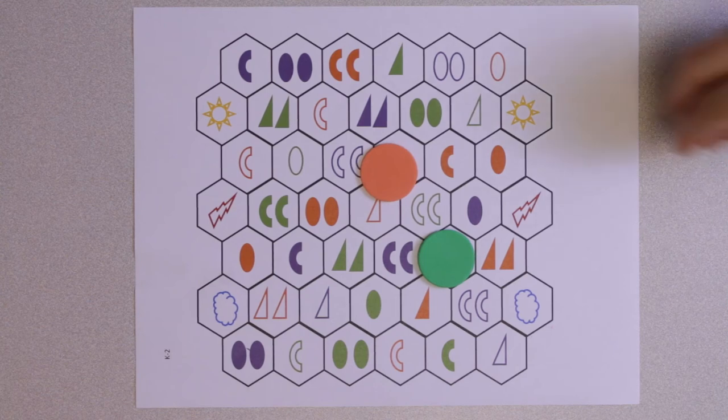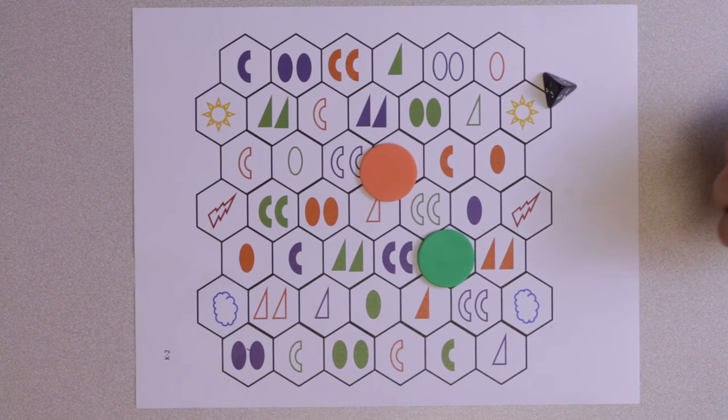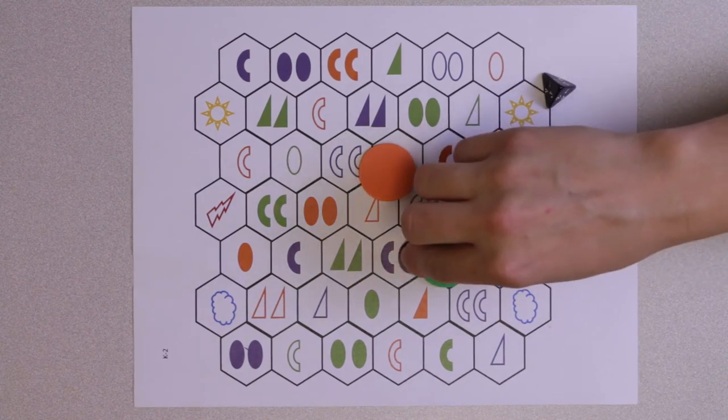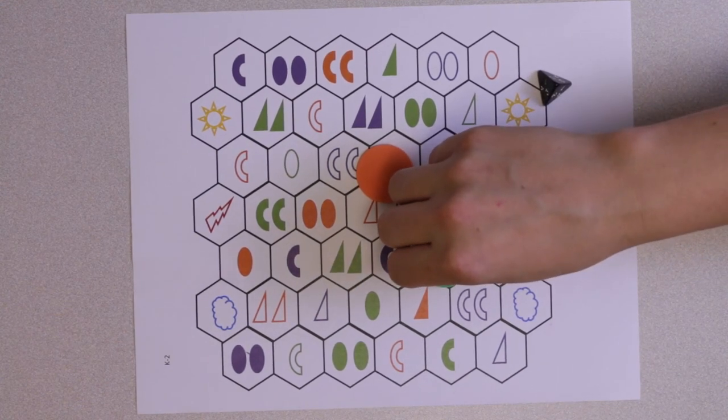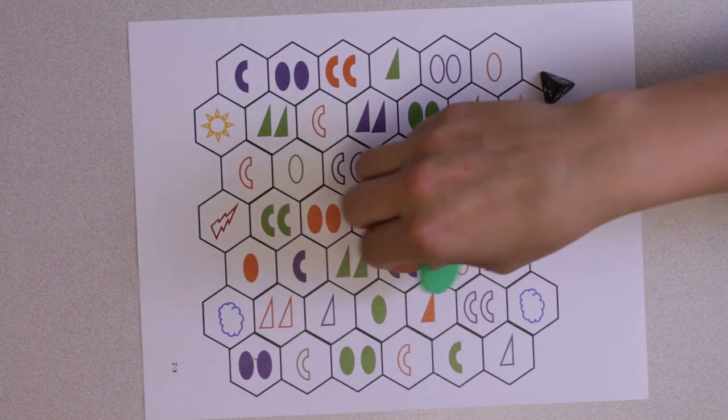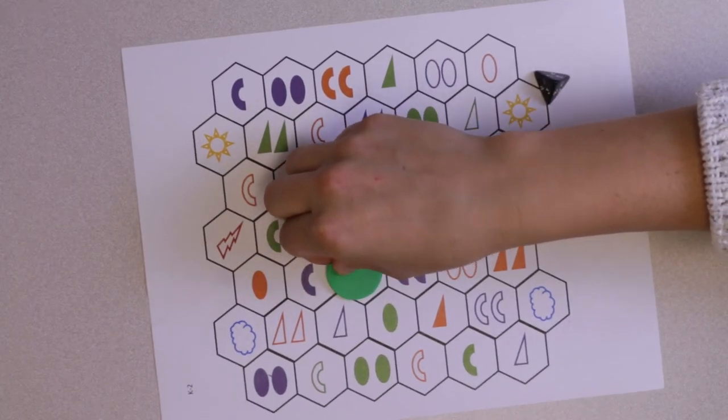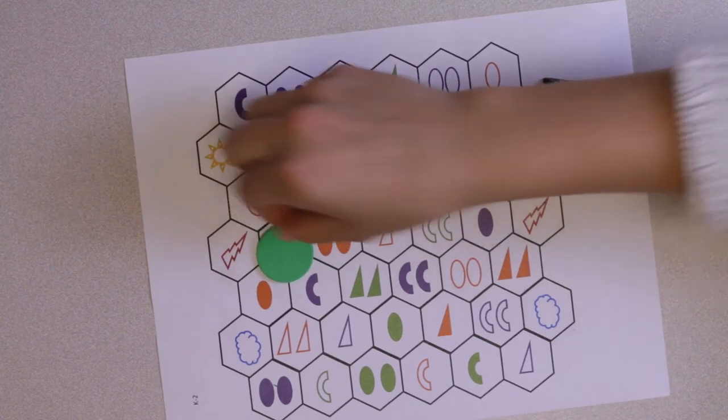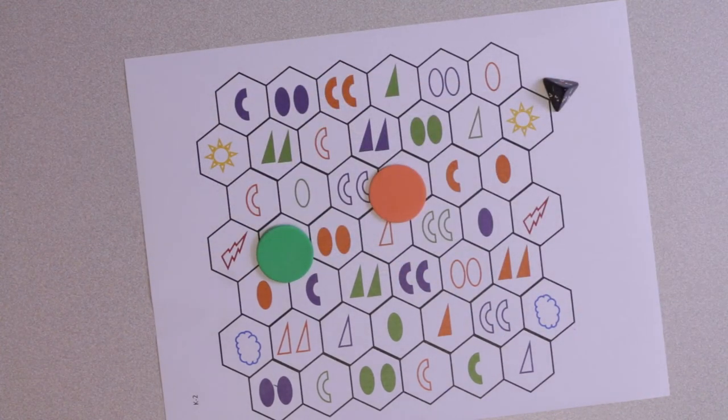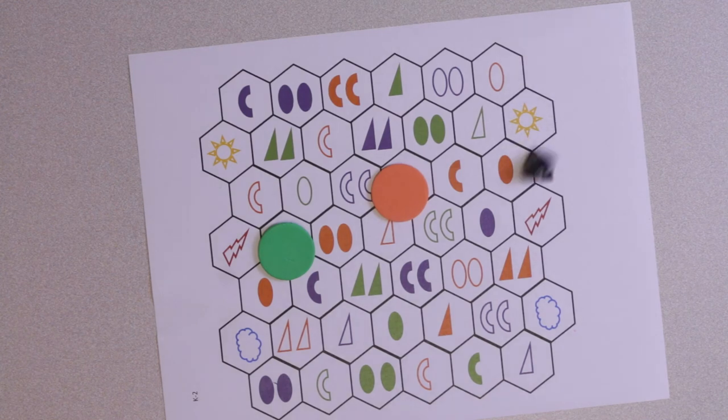Now it's green's turn. Green rolls a 4. Green has a few options. They may move either 4 spaces if each successive space shares a side and an attribute with the one before, or the player can move 1 space if the adjacent space has no attributes in common. In this case, green decides to move 4 successive spaces.